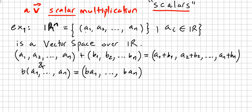Rn is the set where the vectors have components A1, A2, through An, such that each Ai is in R. So the entries here are real numbers. This is a vector space over the field of the reals.